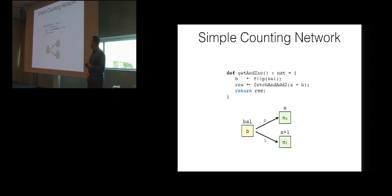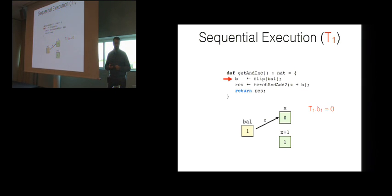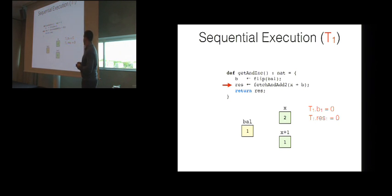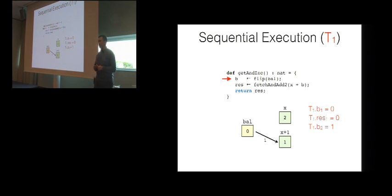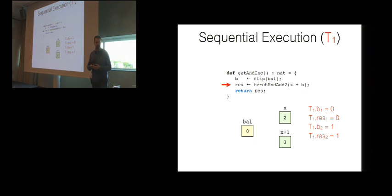This works amazingly well in a sequential setting. The thread comes and checks in with the balancer, gets zero, and increments counter zero for the even value — the counter is bumped up by two and the result is zero. Since the value of the balancer has been changed, if this same thread calls the procedure again, it gets balancer value one and the result one. So the first result is zero, the second is one — results are exhibited in the natural sequential order.